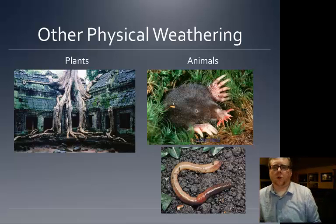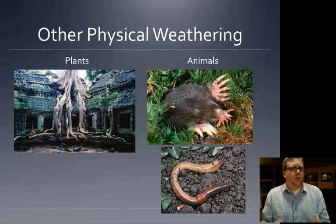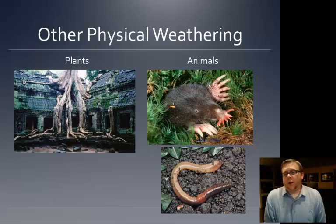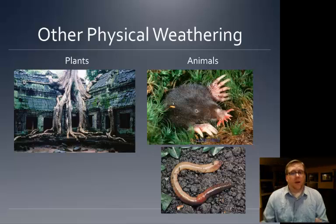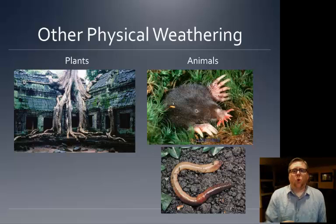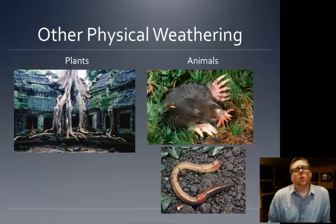Animals also do physical weathering. Moles and voles in your garden are digging and might bring rocks up to the surface where they can get chemically or physically eroded, and even their digging and scraping can physically erode rocks. Earthworms are taking rocks, eating them, making them smaller in their stomachs, and moving them out. These are all types of physical weathering.